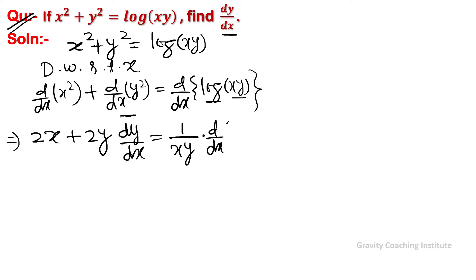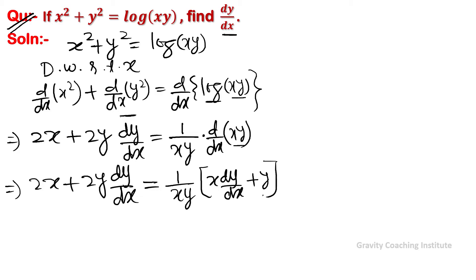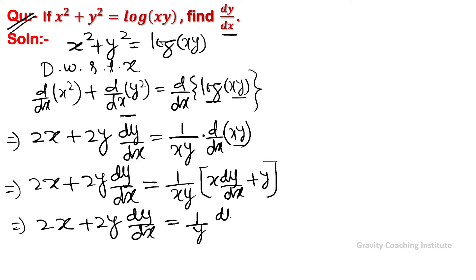So implies that 2x plus 2y dy/dx equal to 1 upon xy, and here we use the product rule, so this becomes x dy/dx plus y. So implies that 2x plus 2y dy/dx equal to, distributing 1 upon xy, we get 1 upon y times dy/dx plus 1 upon x.